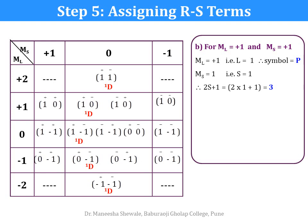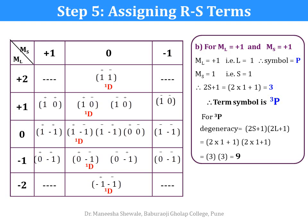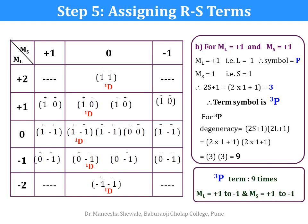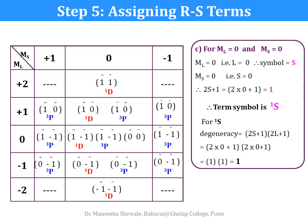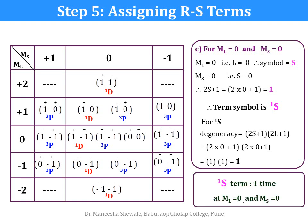Next for ML = plus 1 and MS = plus 1: L = 1 so the symbol is P, and S = 1 so the spin multiplicity will be 3. Hence the term symbol is triplet P. The degeneracy for triplet P is 9. So the triplet P term will appear 9 times in the table from ML = plus 1 to minus 1 and MS = plus 1 to minus 1. Then for ML = 0 and MS = 0: L = 0 so the symbol is S, and the spin multiplicity will be 1. Hence the term symbol is singlet S with degeneracy 1, appearing once in the table at ML = 0 and MS = 0.